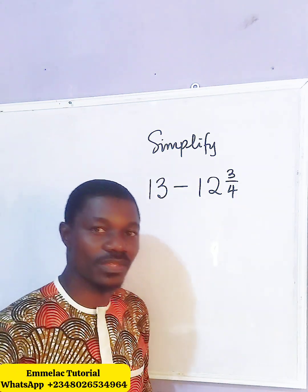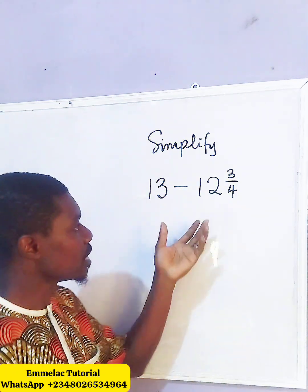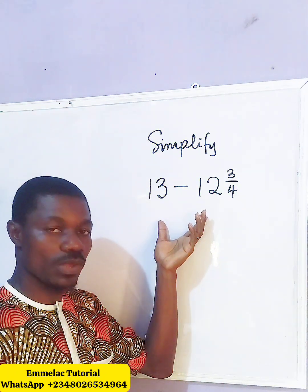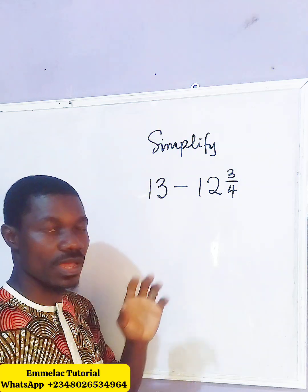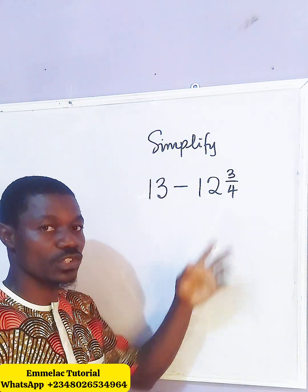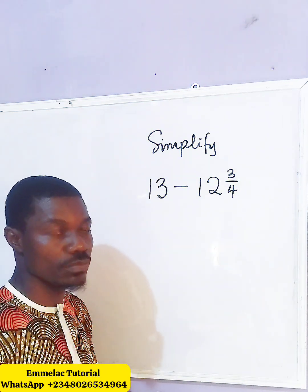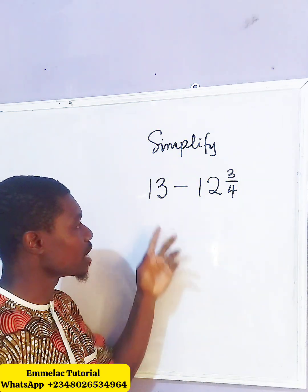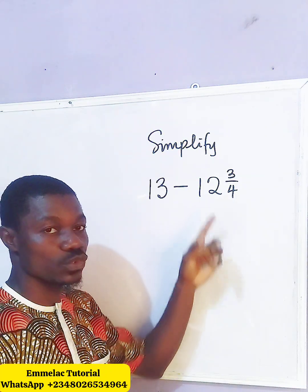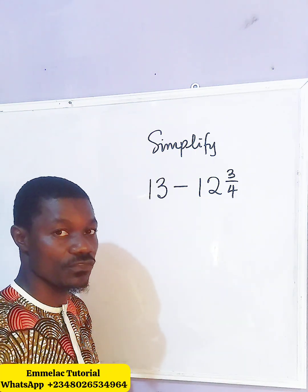Welcome to a Mealup Online tutorial. Before us is this question: how do we subtract a mixed fraction from a whole number? Here we have 13 minus 12 and 3 over 4.